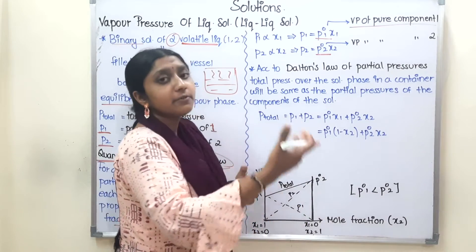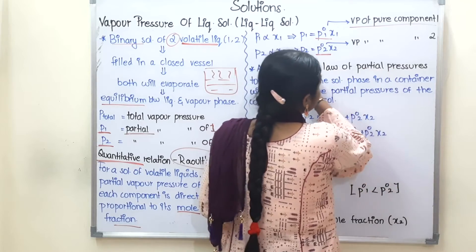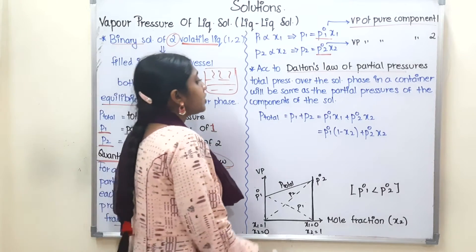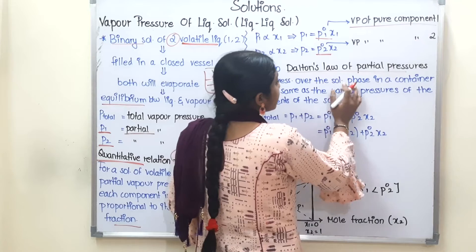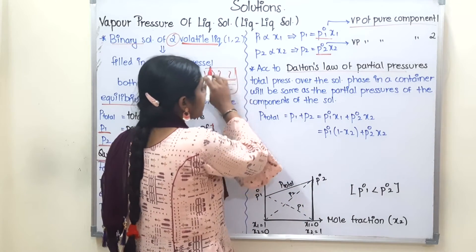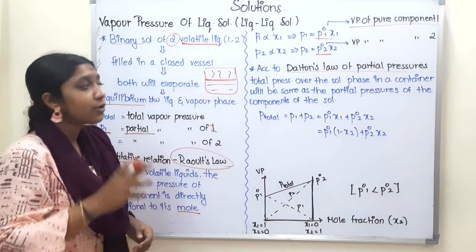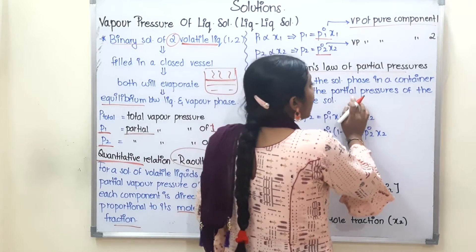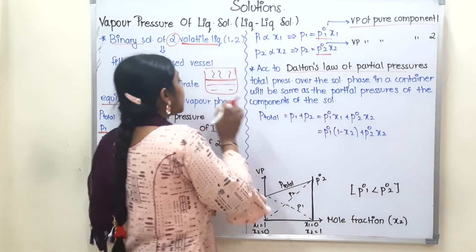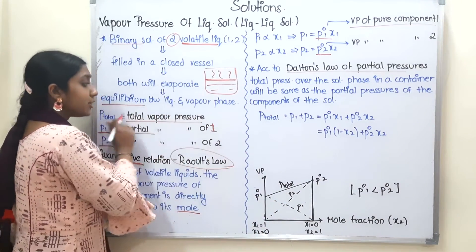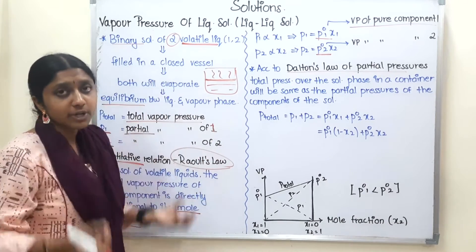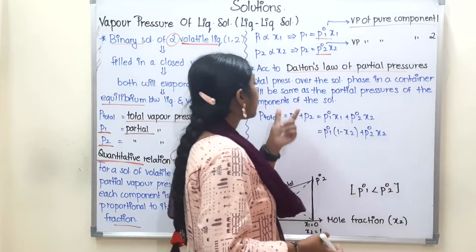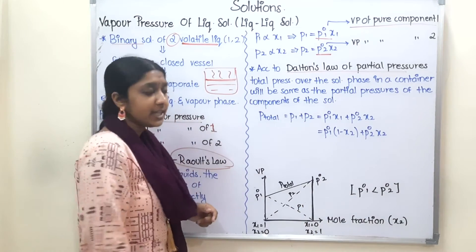Now we will use Dalton's Law of Partial Pressures. The total pressure over the solution phase in a container will be equal to the sum of the partial pressures of the components of the solution. So P total = P1 + P2. This is Dalton's Law.